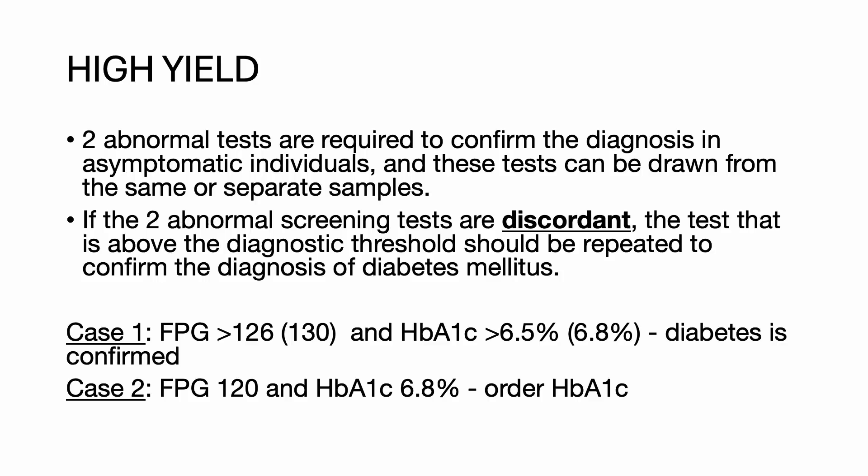However, if the fasting plasma glucose is 120 and the hemoglobin A1c is 6.8%, then there is a discordant result, and the next best step is to repeat the abnormal result. In this case, order another hemoglobin A1c.